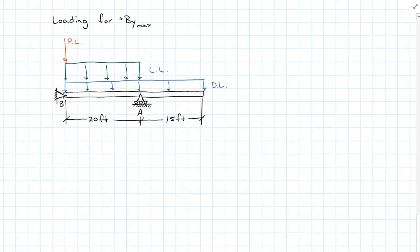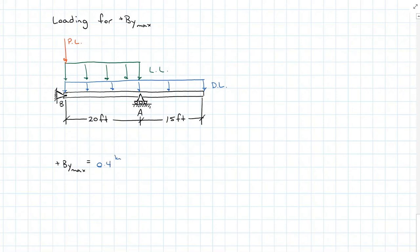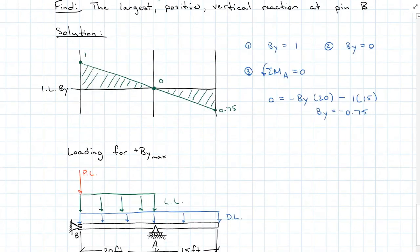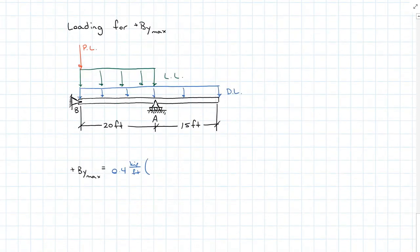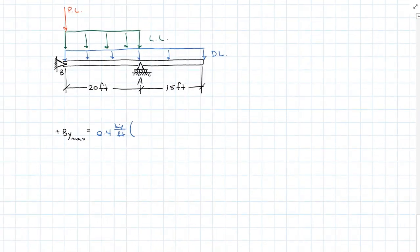Starting with the dead load: positive B_Y max is going to equal 0.4 kilopounds per foot, and I'm going to multiply that to the area. So I have a positive area of base 20 feet times height 1 — that's a triangle, so it's one half — and then minus base 15 feet times height 0.75, which is also a triangle.